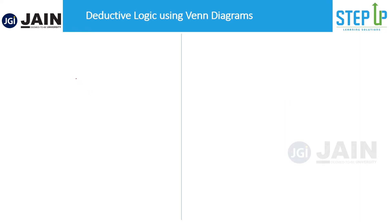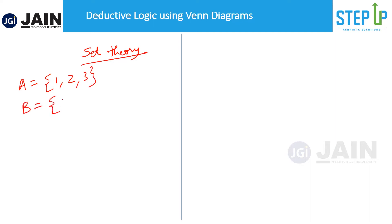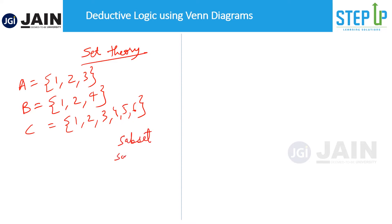What is the concept of Venn diagrams? I'm sure from school we remember that we studied set theory. For example, let's say A is a set with numbers one, two, three; B is a set with numbers one, two, four; and C is a set with numbers one, two, three, four, five, six. So these are three sets — we learn the concepts of subset and superset.